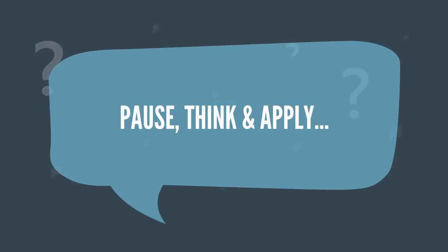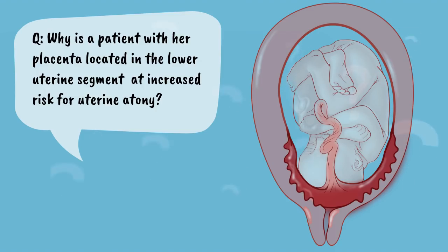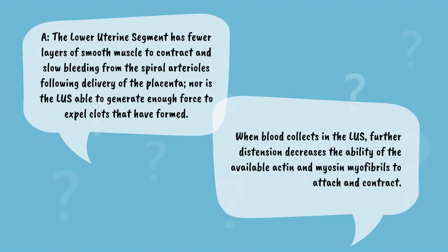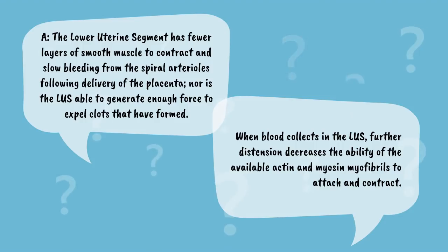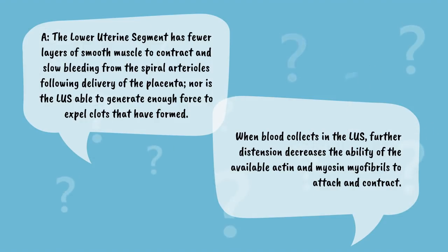Let's pause, think, and apply. Why is a patient with her placenta located in the lower uterine segment at increased risk for uterine atony? The lower uterine segment has fewer layers of smooth muscle to contract and slow bleeding from the spiral arterioles following delivery of the placenta. Nor is the lower uterine segment able to generate enough force to expel clots that have formed. When blood collects in the lower uterine segment, further distension decreases the ability of the available actin and myosin myofibrils to attach and contract.